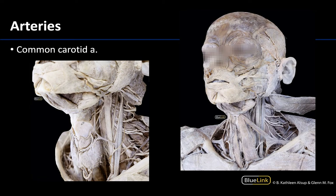Let's focus on the common carotid first, and I'll point out on both of these images where we can find the common carotid. You can see it located right here, as well as quite prominently on this more anterior lateral image. The common carotid is either a direct branch of the aortic arch on the left side, which is what we're seeing on both of these images, or the brachiocephalic trunk on the right.